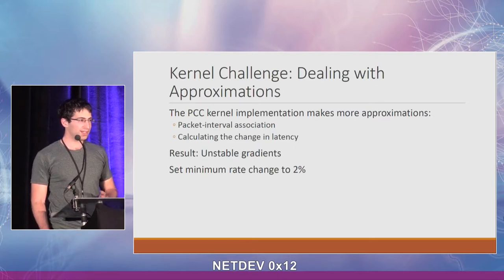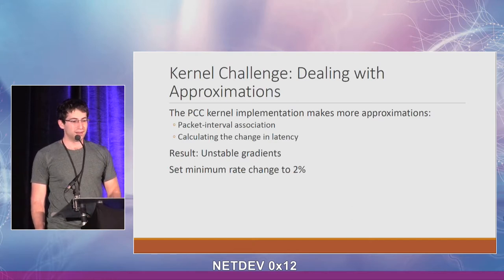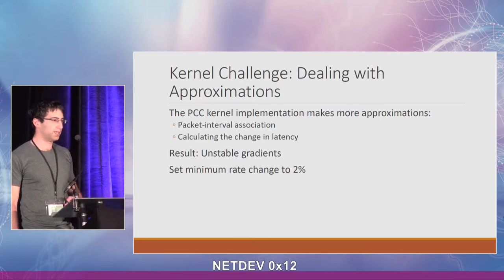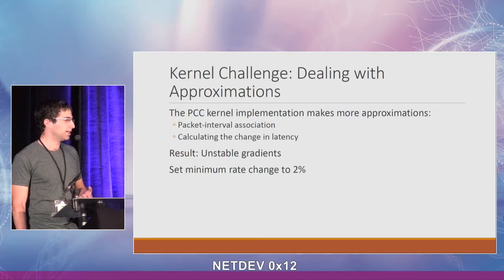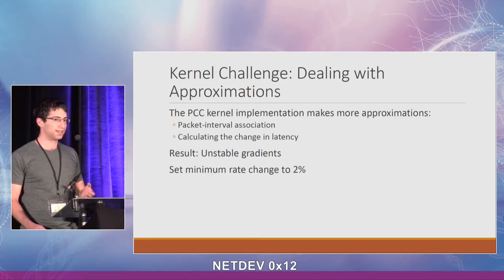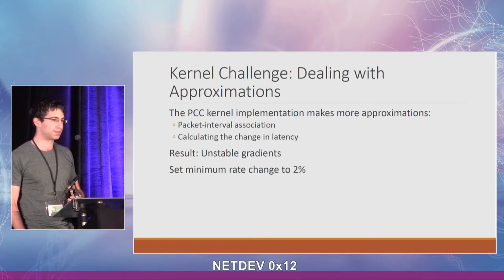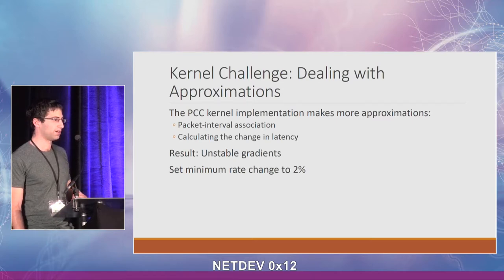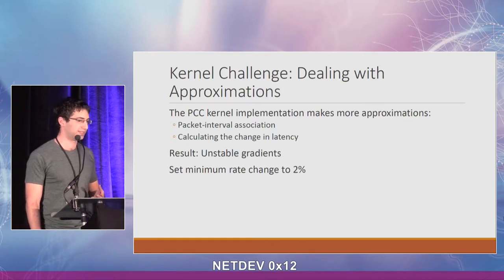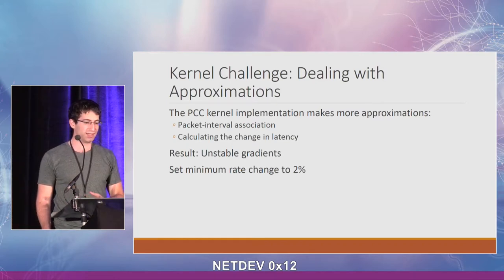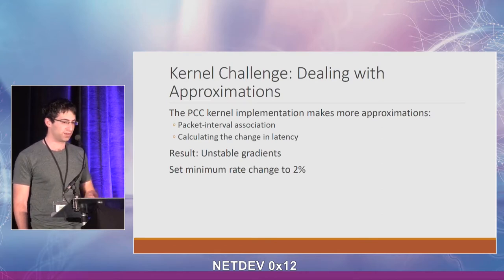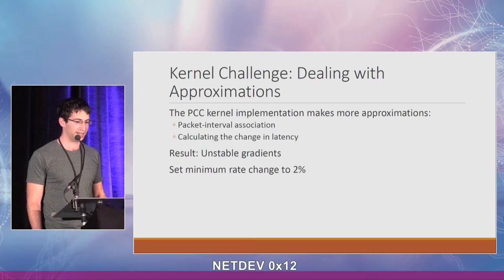This resulted in a lot of instability in the gradients, which really hurt the performance of the algorithm. To help with that, we set the minimum rate change to 2%, meaning every time we test slightly higher and lower rates in the probing and moving states, we force the rate change to be at least 2% to get more correct gradients, since the difference won't be as noisy against a smaller rate change.